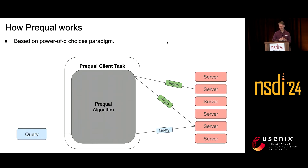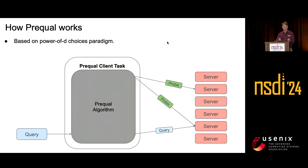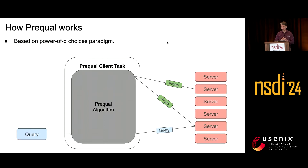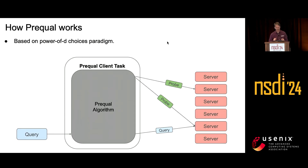The basic idea is to use the power of D choices paradigm, which comes from putting balls into bins. The well-known result is that if you sample two bins and pick the least loaded one, you'll do exponentially better than just picking random bins, as far as minimizing the maximum loaded bin. So this load balancer essentially probes two random servers and picks the best one according to some scoring, then assigns a query to that server.